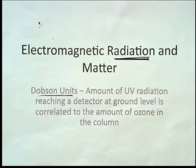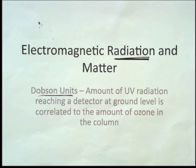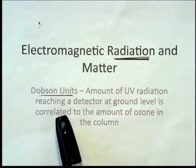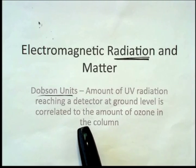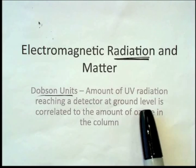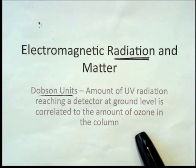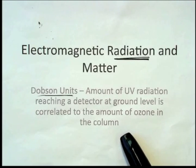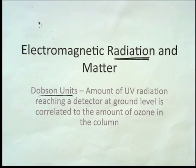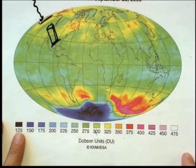Electromagnetic radiation is moving energy that has no mass. There's a continual spectrum of radiation, and we'll look at how we define those different parts of the spectrum in a minute. We know that there must be some interaction between ultraviolet light and ozone because of the Dobson unit we talked about last time. The amount of ultraviolet radiation reaching a detector at ground level is correlated to the amount of ozone in the column. So ultraviolet light must be interacting with ozone.